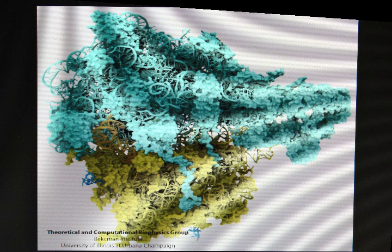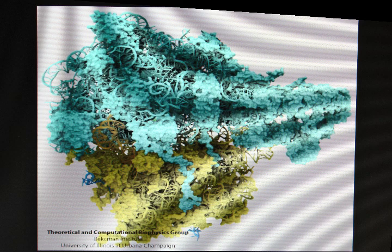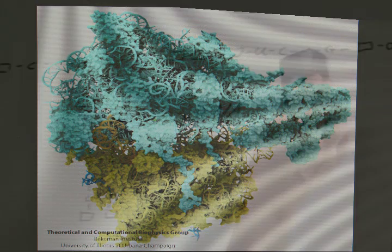RNA, whether it's messenger RNA or whatever kind of RNA, is a product of transcription, which means that if there's a stem loop in the RNA, there must have been a stem loop in the associated DNA.